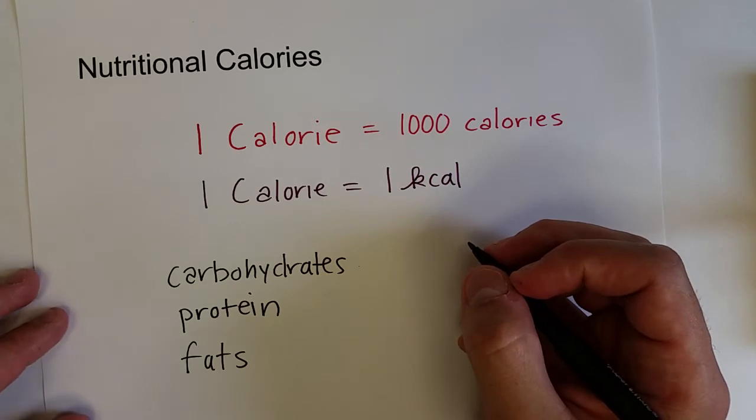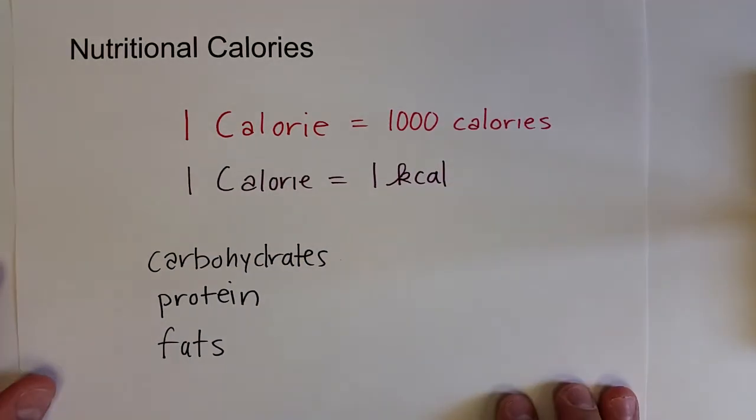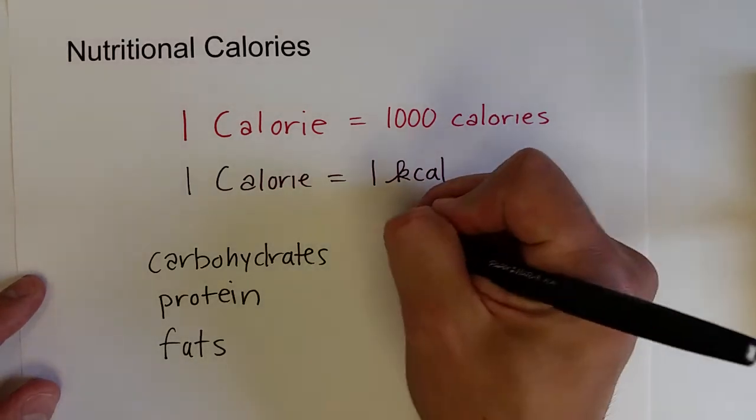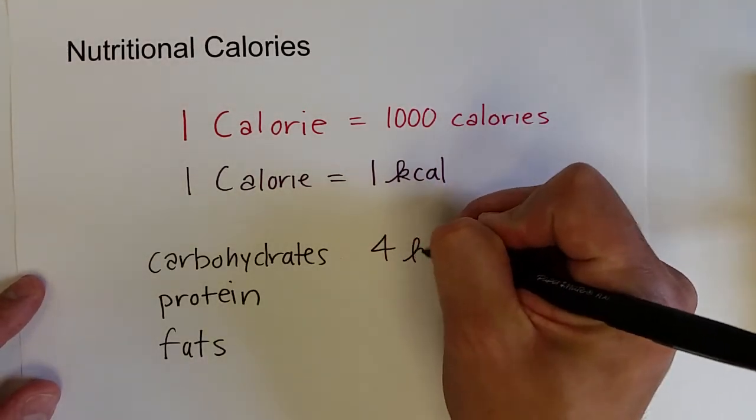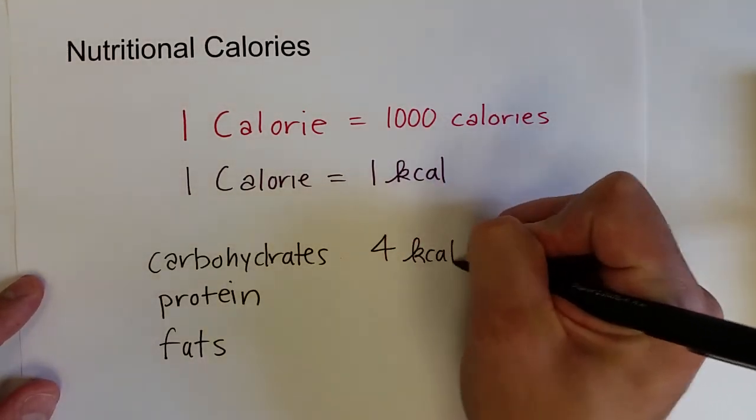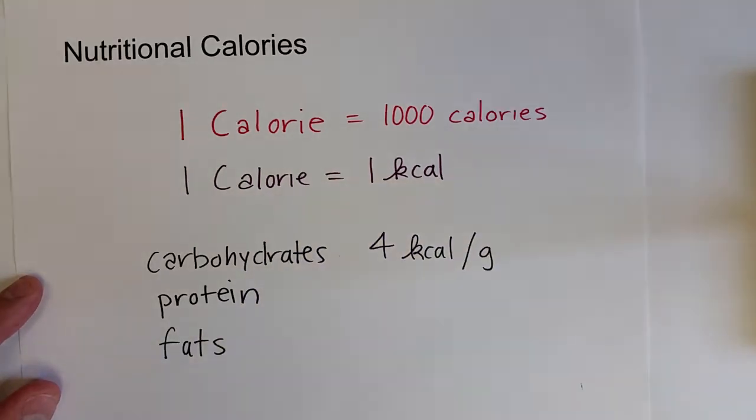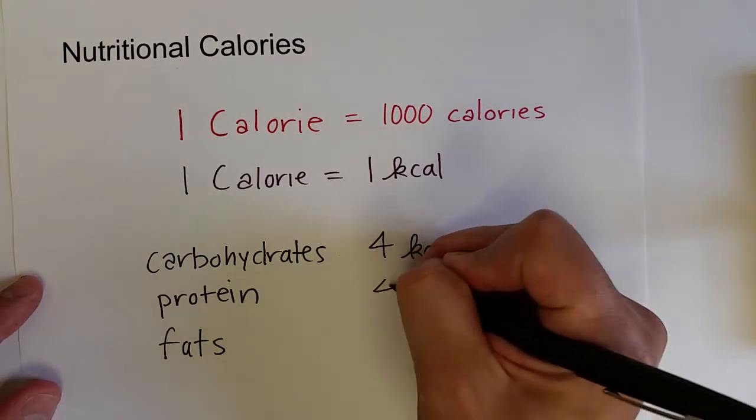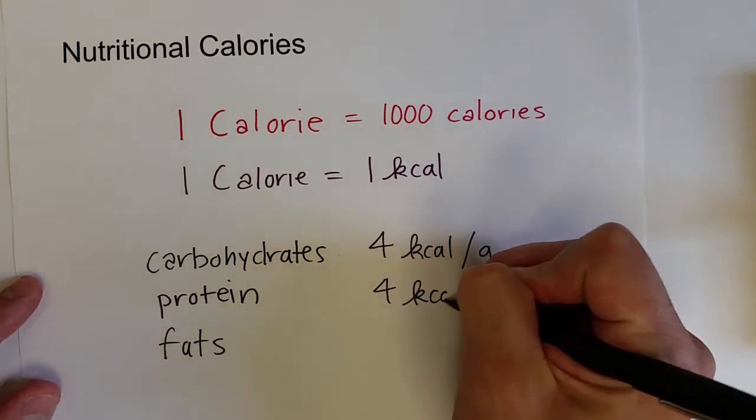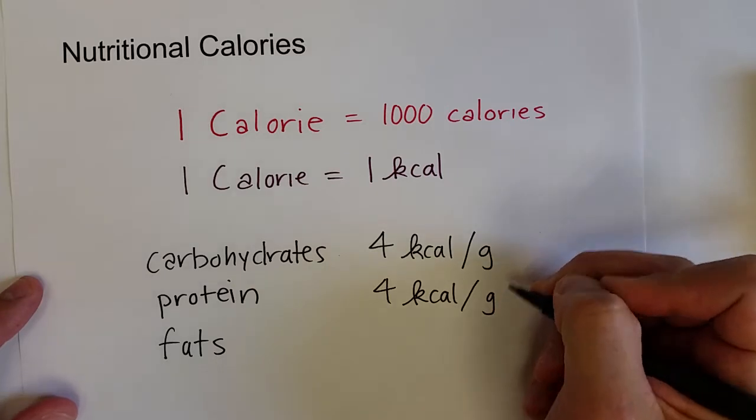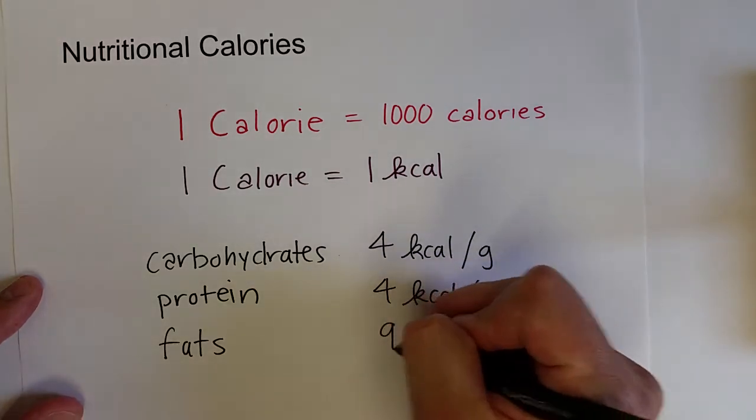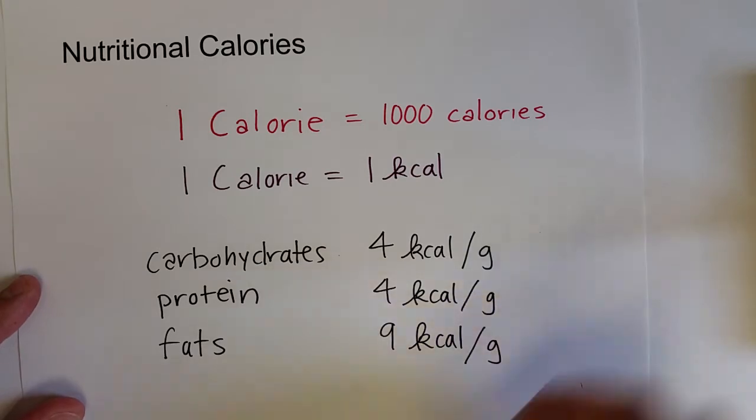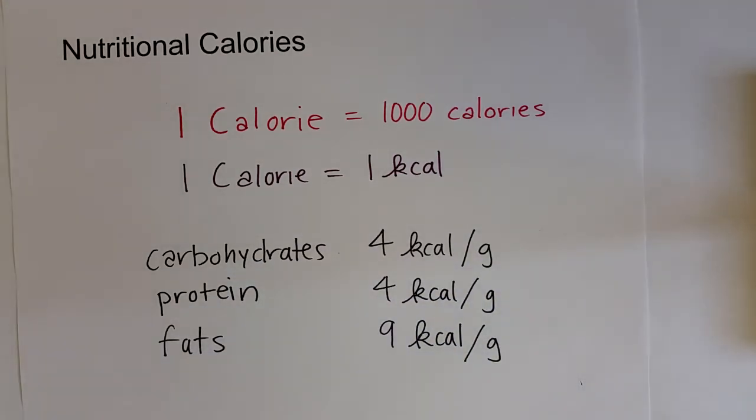And it's generally the round numbers that we use for these types of molecules, is that carbohydrates will give us four kilocalories, or kcal, per gram. Proteins also give us four kilocalories, or four kcal, and fats give us nine kilocalories of energy per gram.